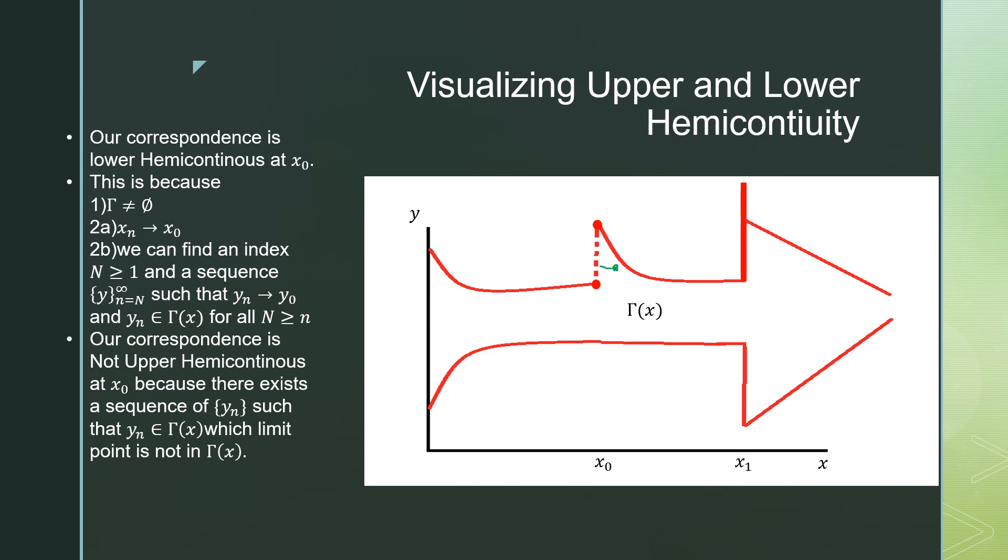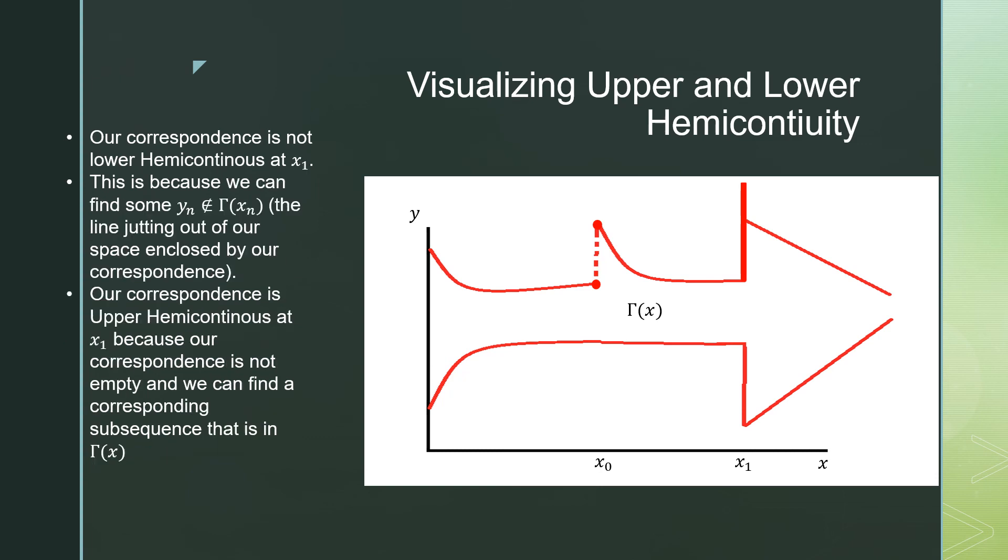If we were going to have one of these guys here and we were to asymptotically approach it over here, you won't be able to approach that point from that sequence, so it's not defined across all values within our correspondence.